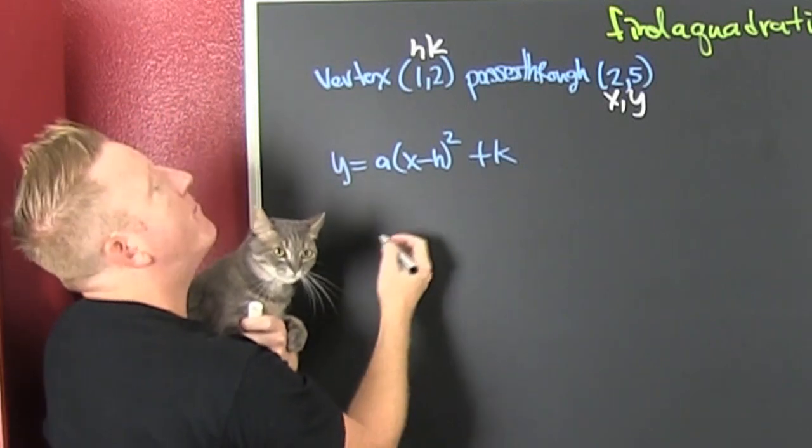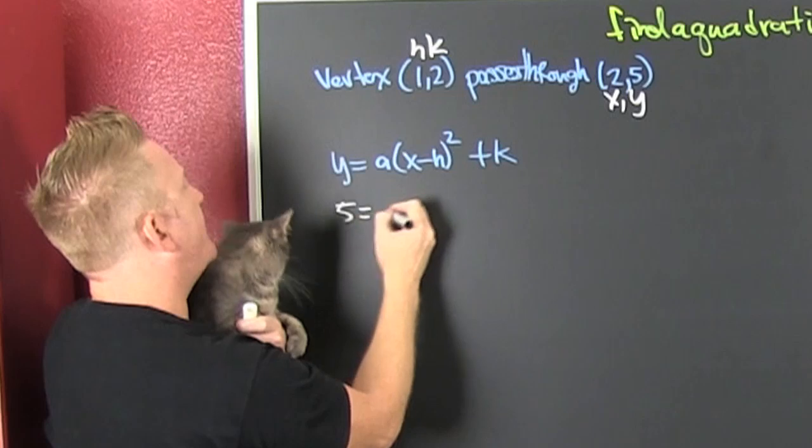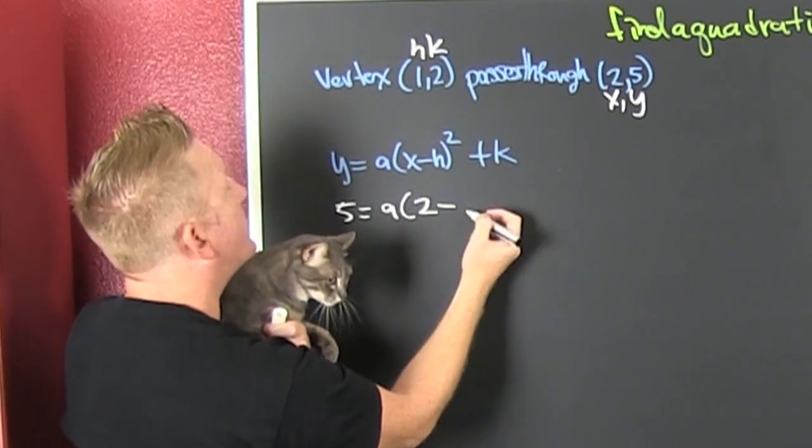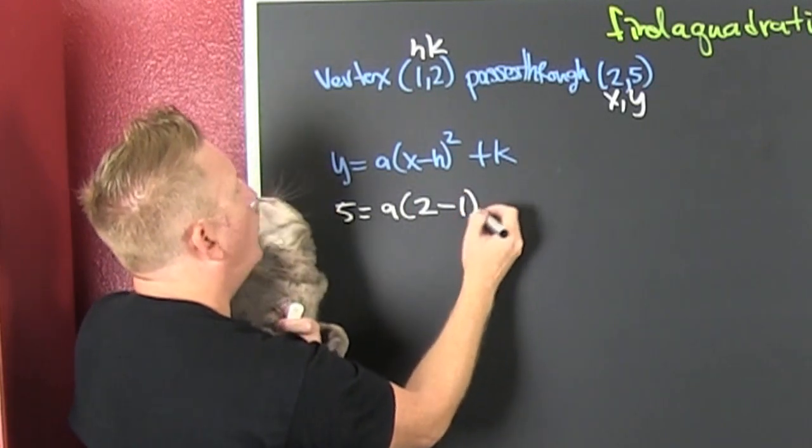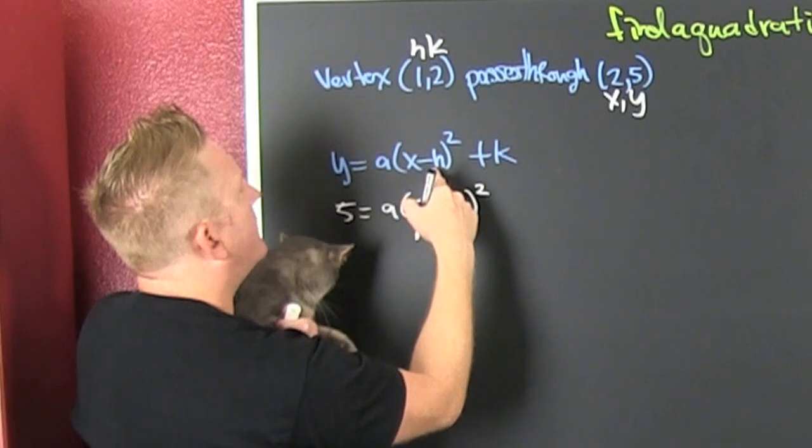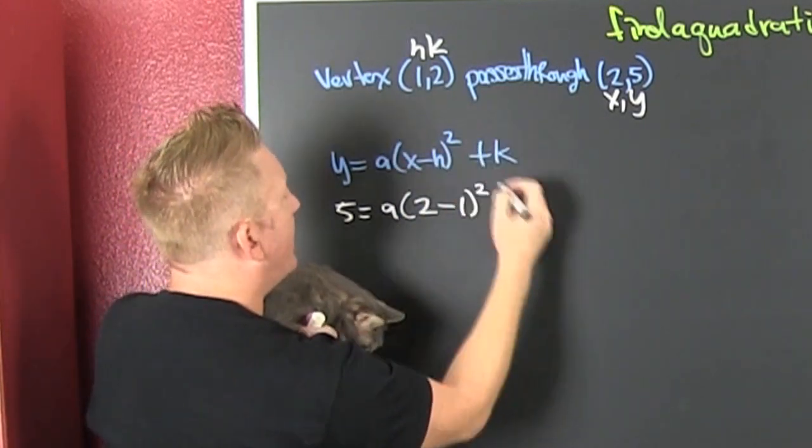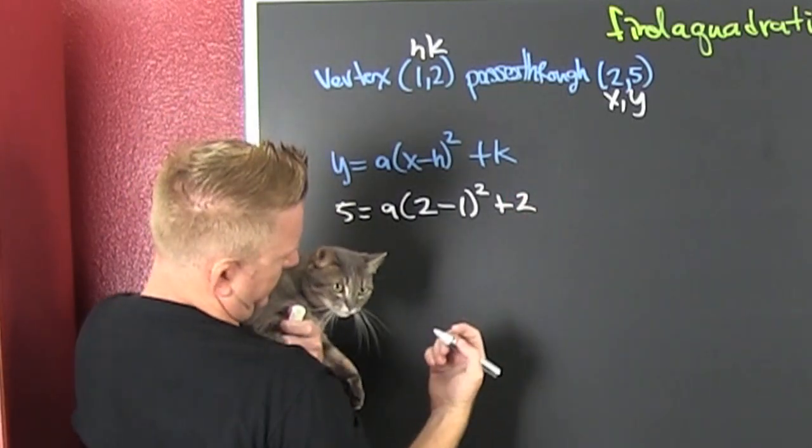So then I go and I put my values in. That's my Y. So that's a 5. That's equal to an A times what's my X? I heard 2. Minus what's my H? Well that's the X coordinate of the vertex which is a 1. Then I'm going to square that and yeah. And then I'm going to add that to my K. The Y coordinate of my vertex which is a deuce. You see that?